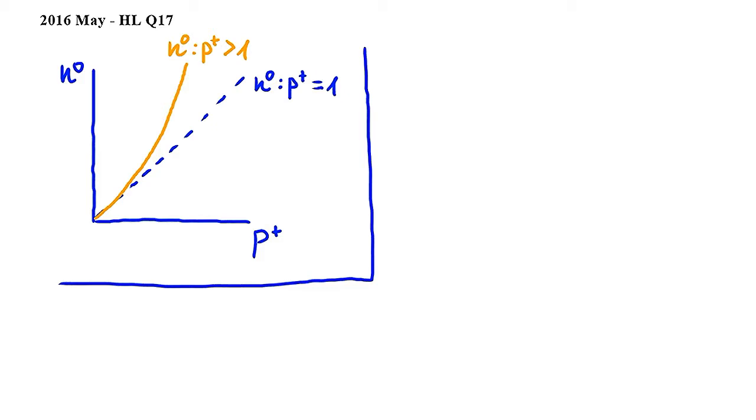From the orange graph we can see that as proton number increases, the neutron number to proton number ratio becomes larger than one.